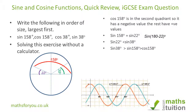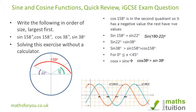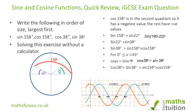Now we need to compare cos 38° and sin 38°. For values of x between 0 and 45 degrees, for any given value of x the cosine value is greater than the sine value. That means cos 38° is greater than sin 38°. So we end up with: cos 38° > sin 38° > sin 158° > cos 158 degrees.